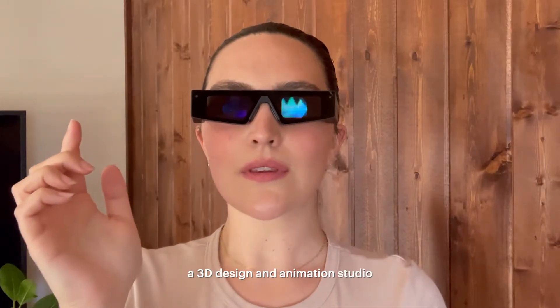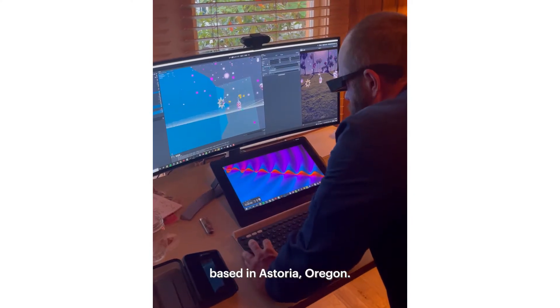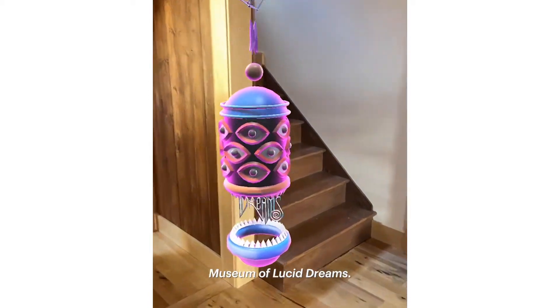Hi, we are Luke and Morgan Choice from Velvet Spectrum, a 3D design and animation studio based in Astoria, Oregon. Our latest lens is called the Museum of Lucid Dreams.